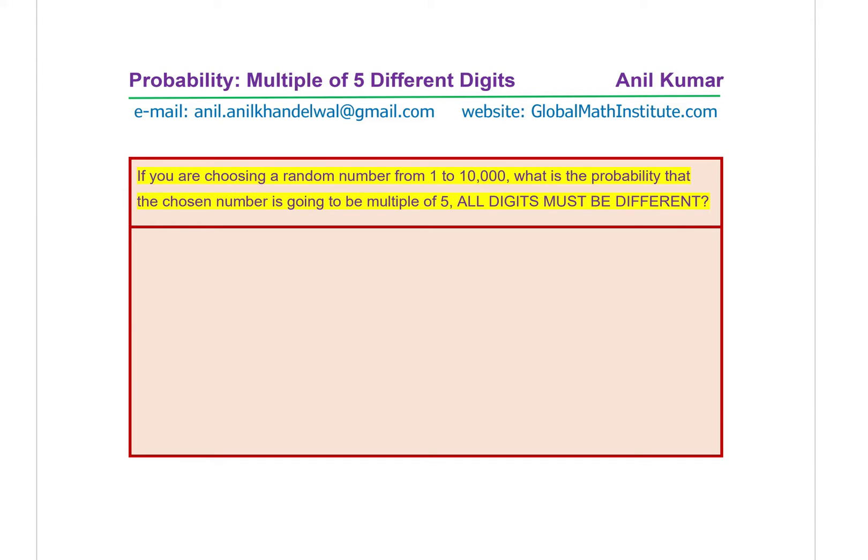So I would like you to actually pause the video, answer this question, and then look into my suggestions. So all digits of the multiples of 5 should be different. That is important to understand.